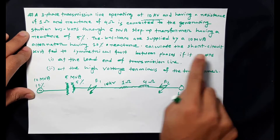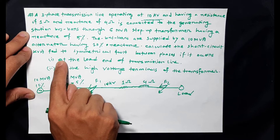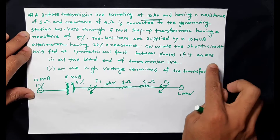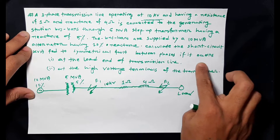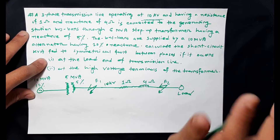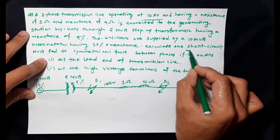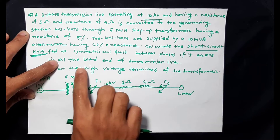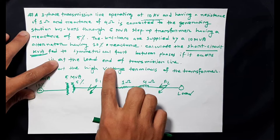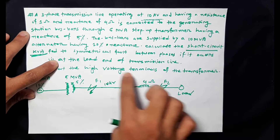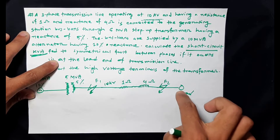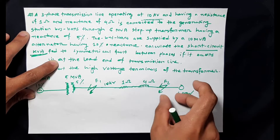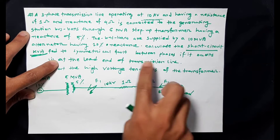Calculate the short circuit kVA for a symmetrical fault between phases if it occurs. We need to find the short circuit kVA at the bus bar, and also at the load end of the transmission line — the fault current short circuit kVA.